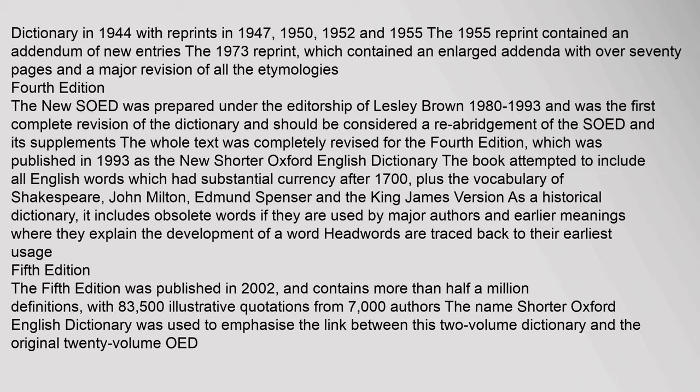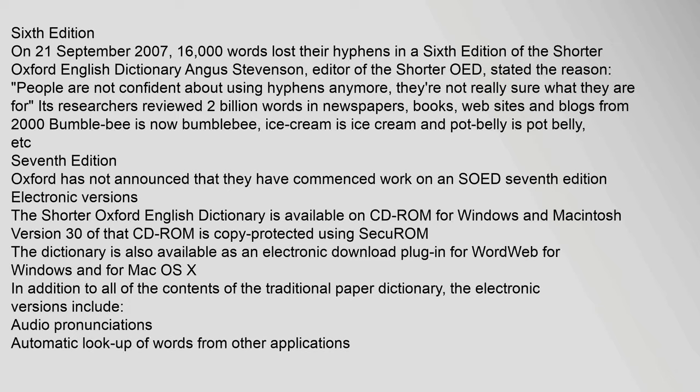On 21 September 2007, 16,000 words lost their hyphens in a sixth edition of the Shorter Oxford English Dictionary. Angus Stevenson, editor of the Shorter OED, stated the reason: people are not confident about using hyphens anymore — they're not really sure what they are for. Its researchers reviewed two billion words in newspapers, books, websites, and blogs from 2000. For example, Bumblebee is now Bumblebee, Ice Cream is Ice Cream, and Pot Belly is Pot Belly.